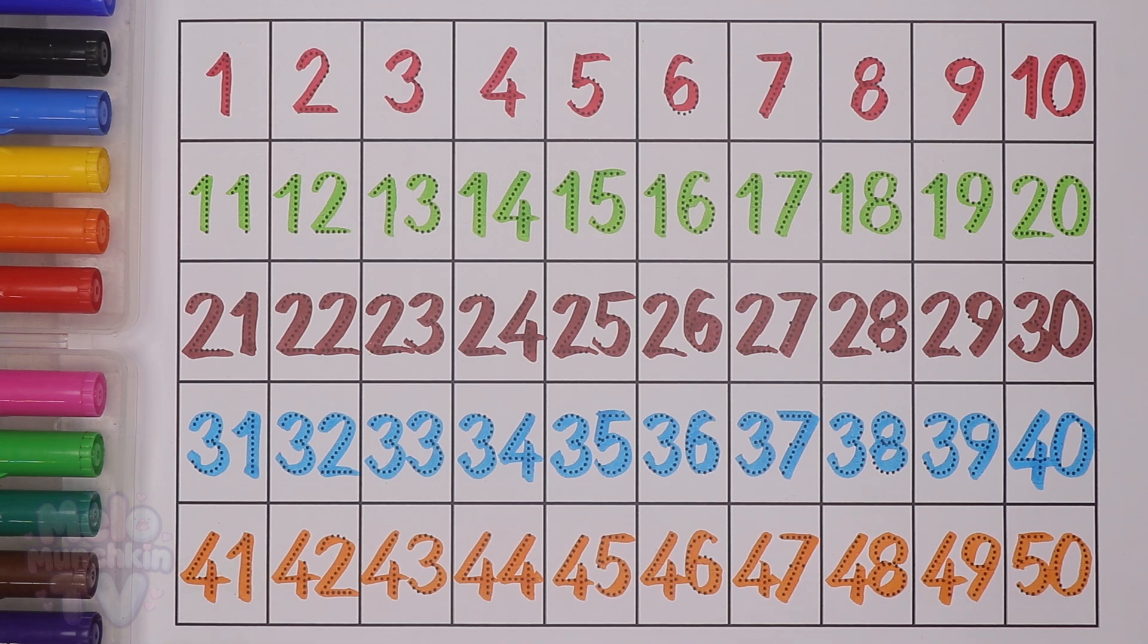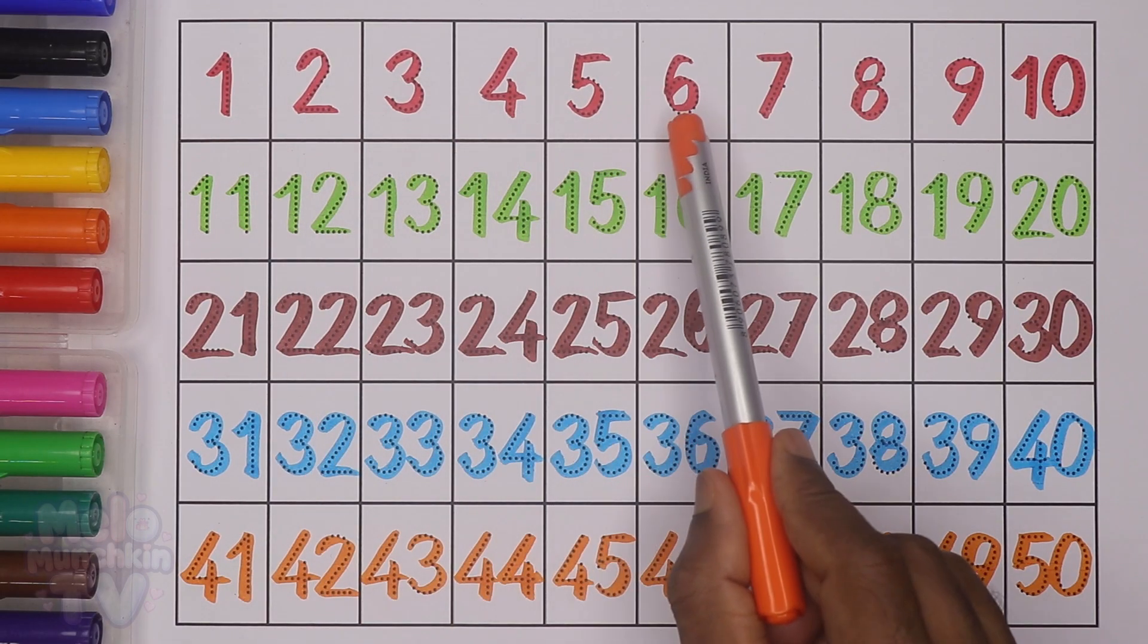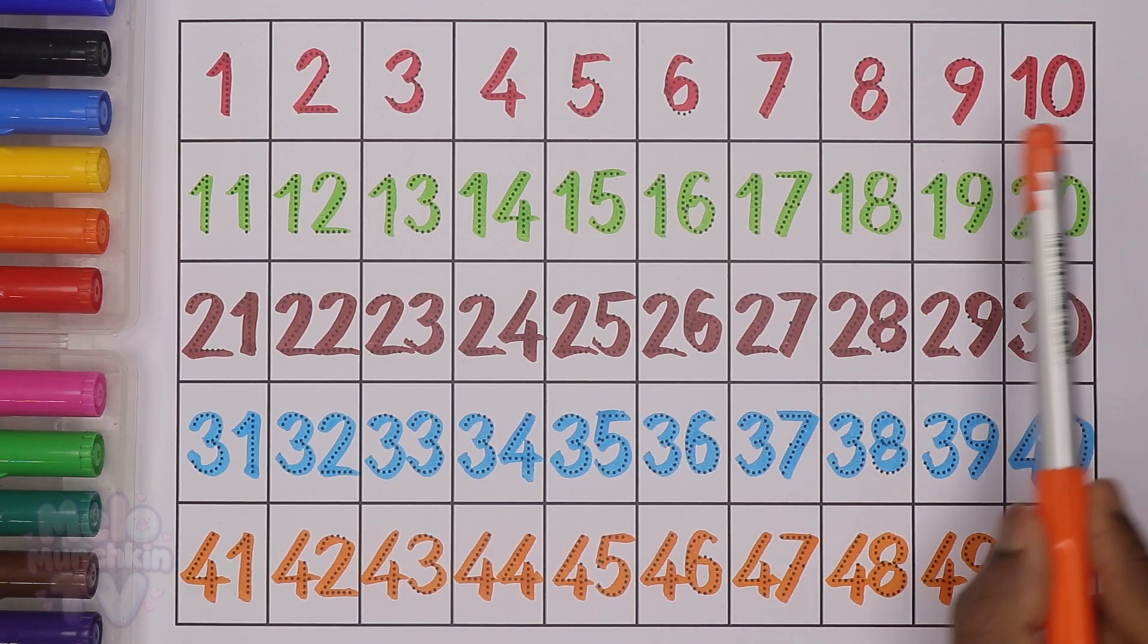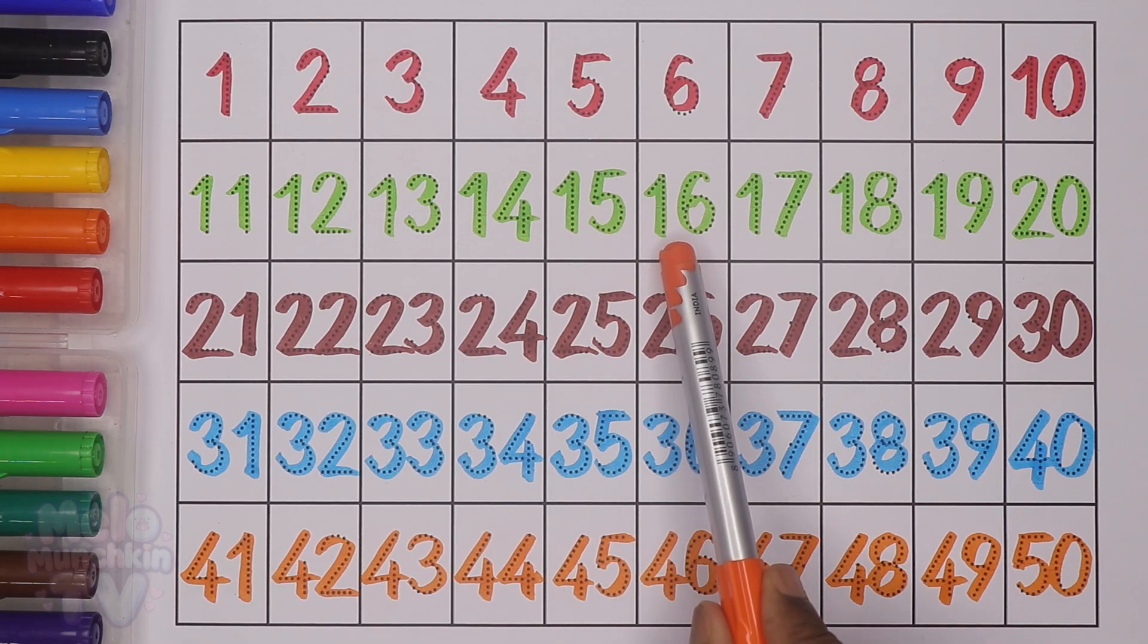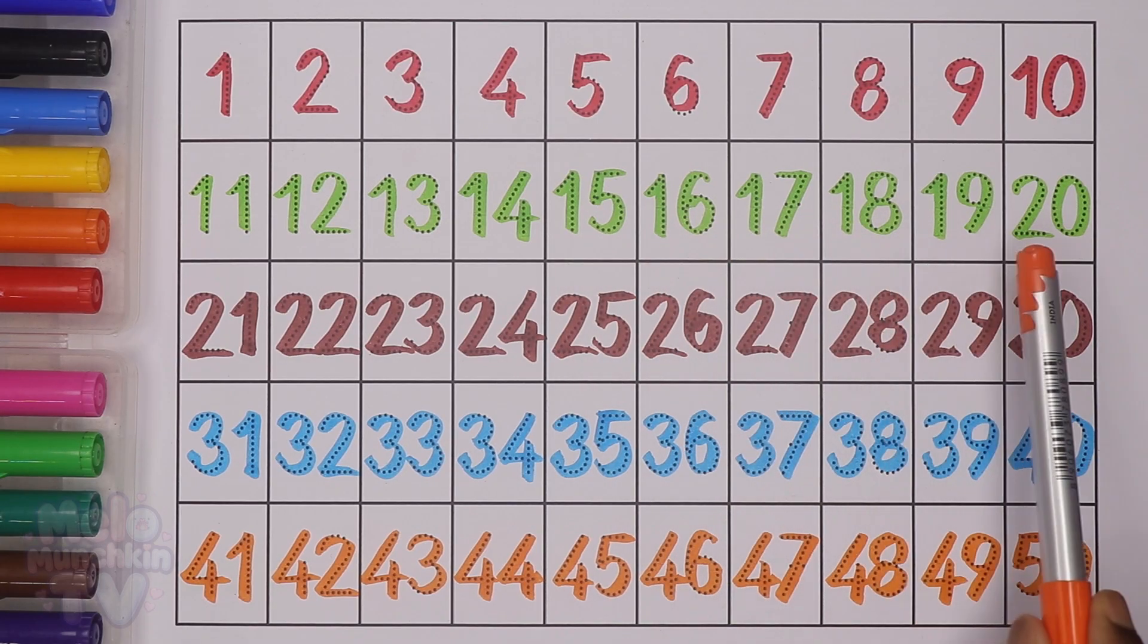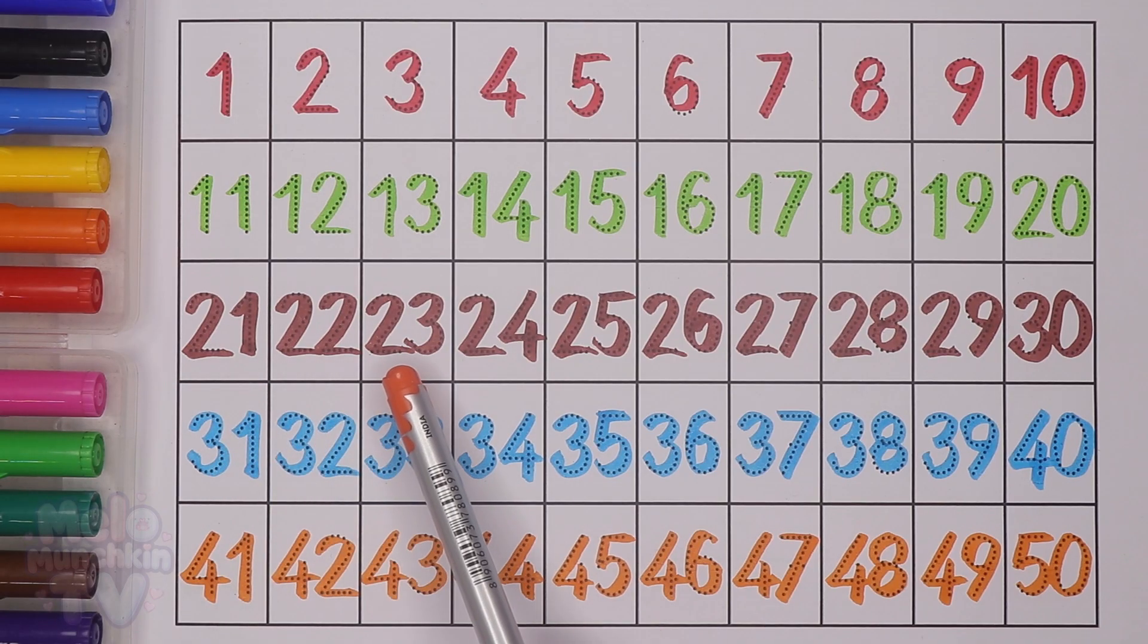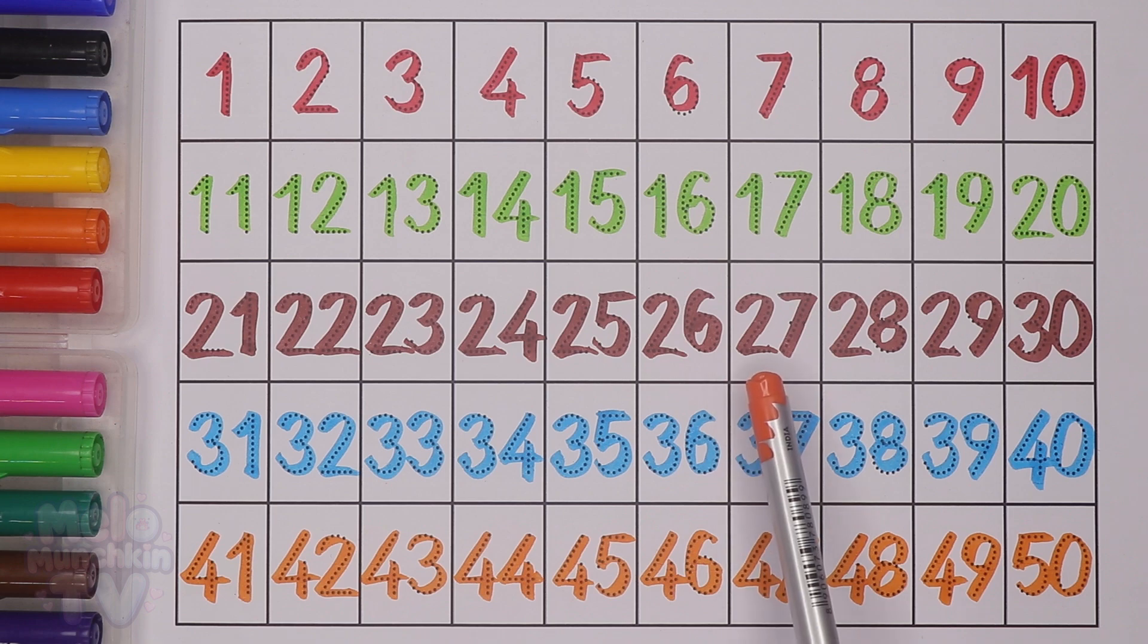So here we have completed our numbers from 1 to 50. Let's repeat once again: 1, 2, 3, 4, 5, 6, 7, 8, 9, 10, 11, 12, 13, 14, 15, 16, 17, 18, 19, 20, 21, 22, 23, 24, 25, 26, 27, 28, 29, 30.